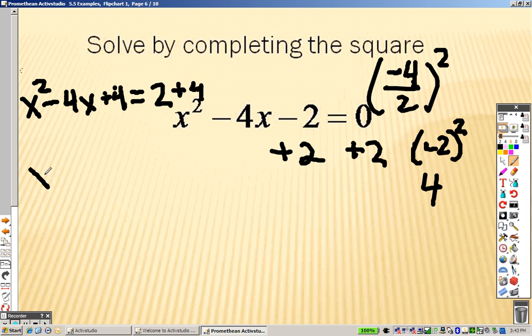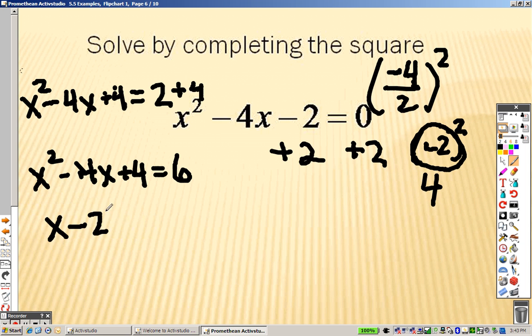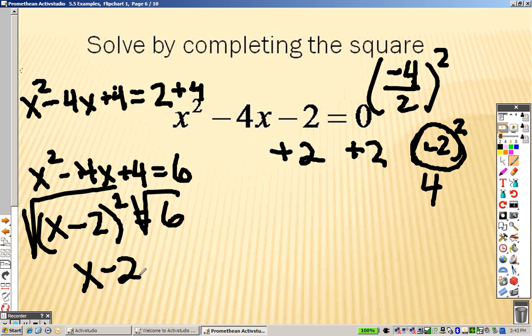So, I end up getting x squared minus 4x plus 4 equals 6. And whatever is in the parentheses is your factor. So this is x minus 2 squared equals 6. I would square root both sides to get x minus 2 equals plus or minus the square root of 6.